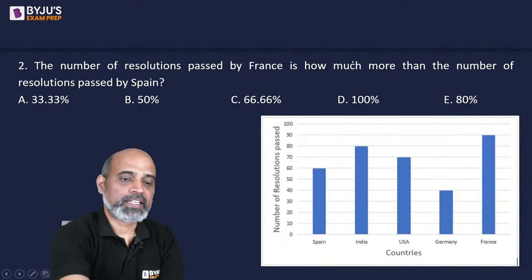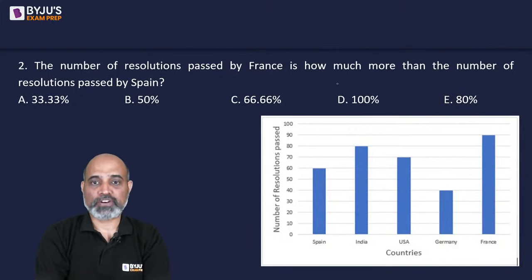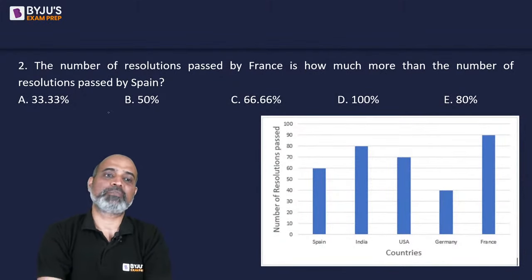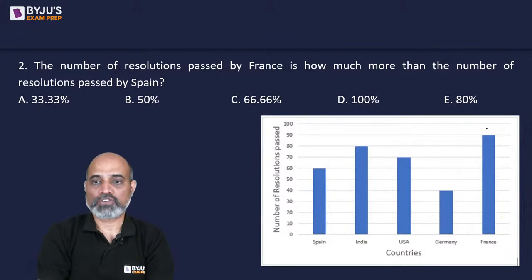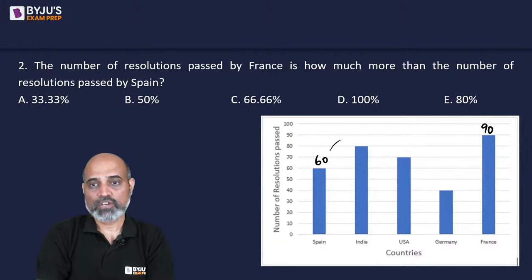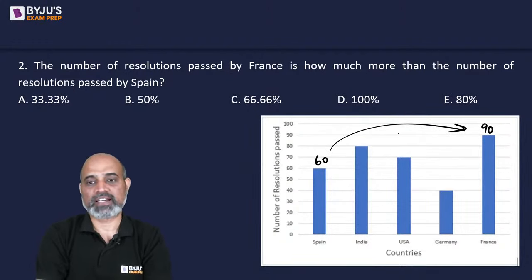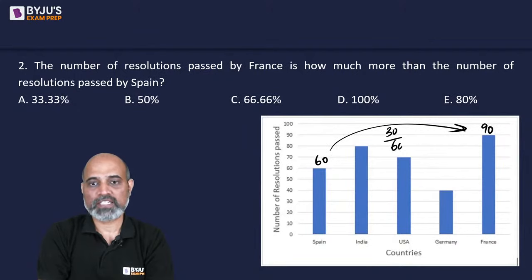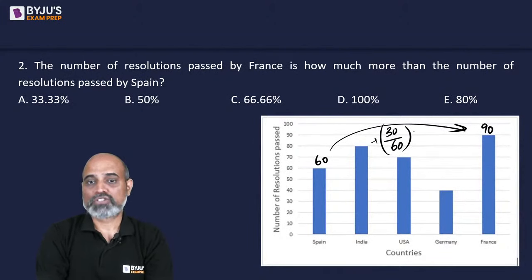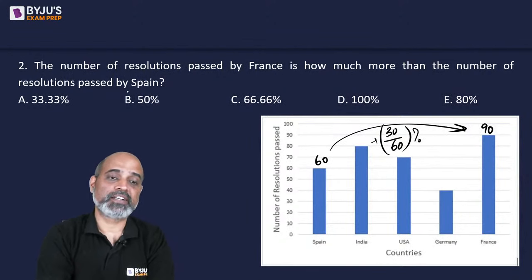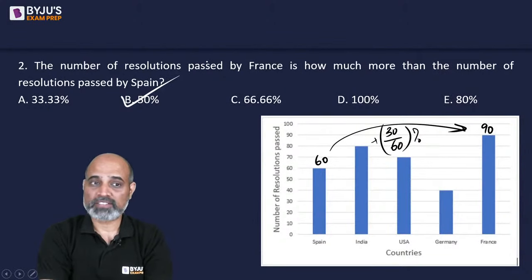Next question: the number of resolutions passed by France is how much more than that of Spain, as a percentage? France is 90 and Spain is 60. The difference is 30 out of 60, which is 30/60 = 1/2 = 50%. So B is our answer.